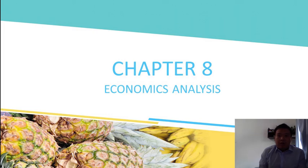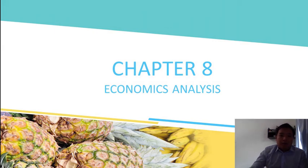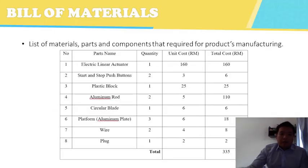Good morning to the panels. I'm Dexter from IDP Group 14. Today I would like to present Chapter 8, Economics Analysis, and Chapter 9, Discussion and Conclusion. The bill of materials is a list of materials, parts, and components required for product manufacturing. In our product, we require 8 parts and components where the total cost is RM335.